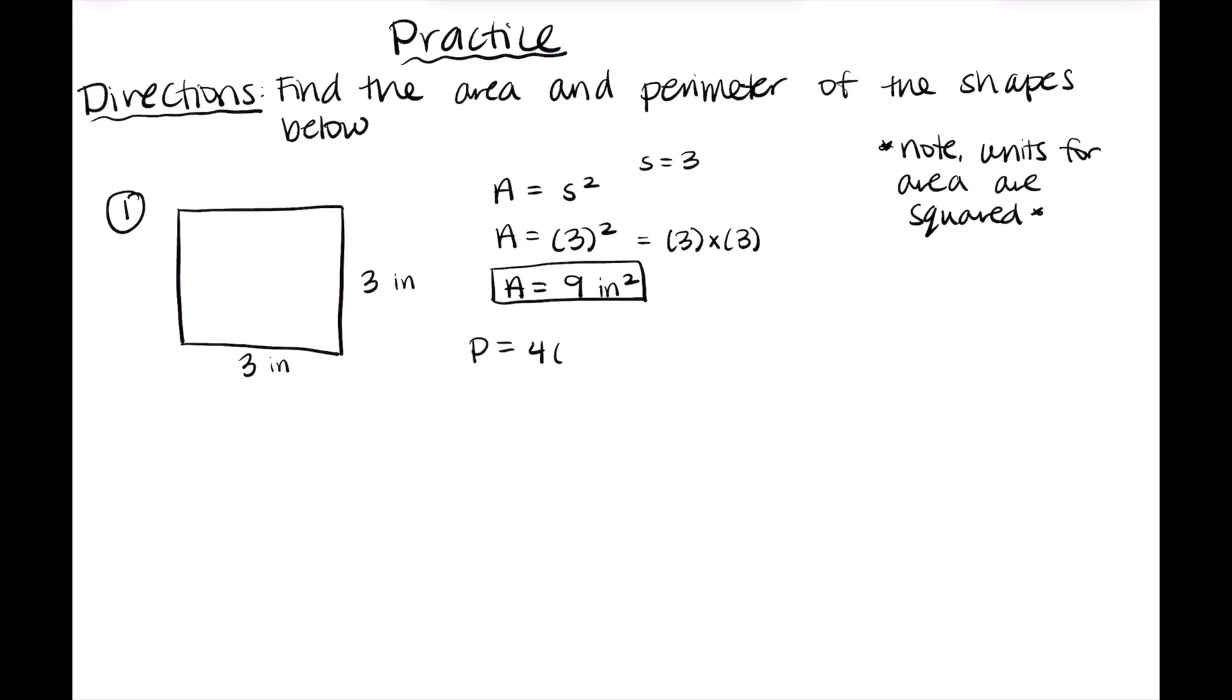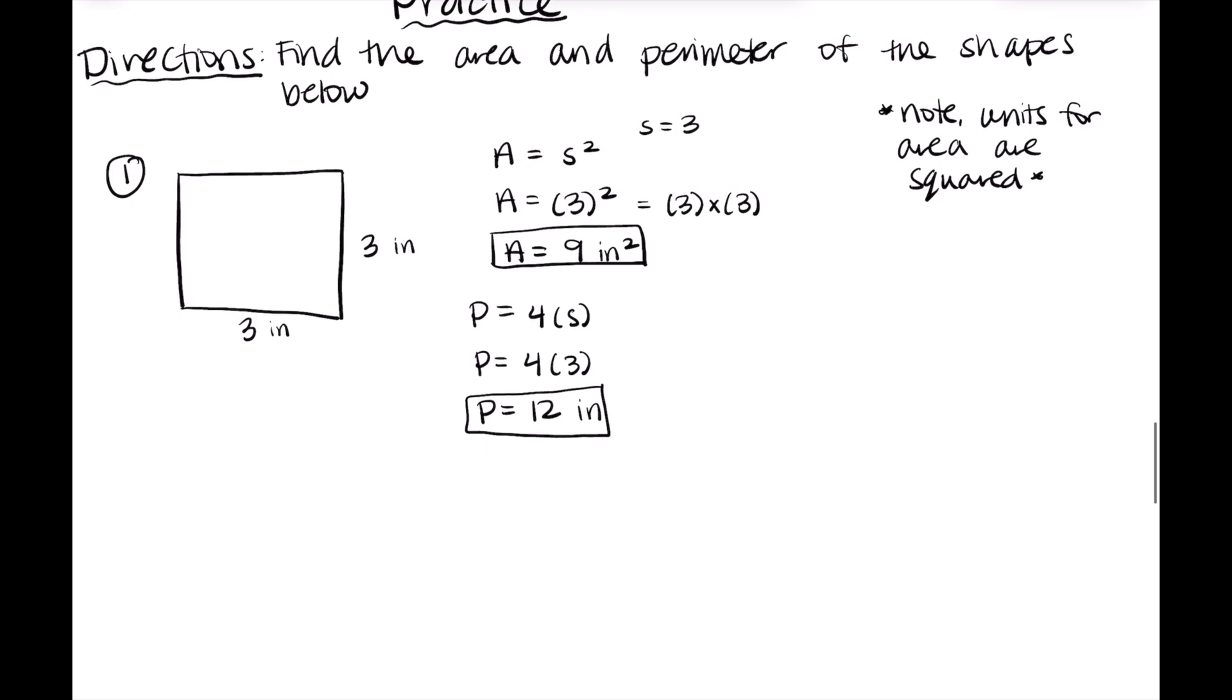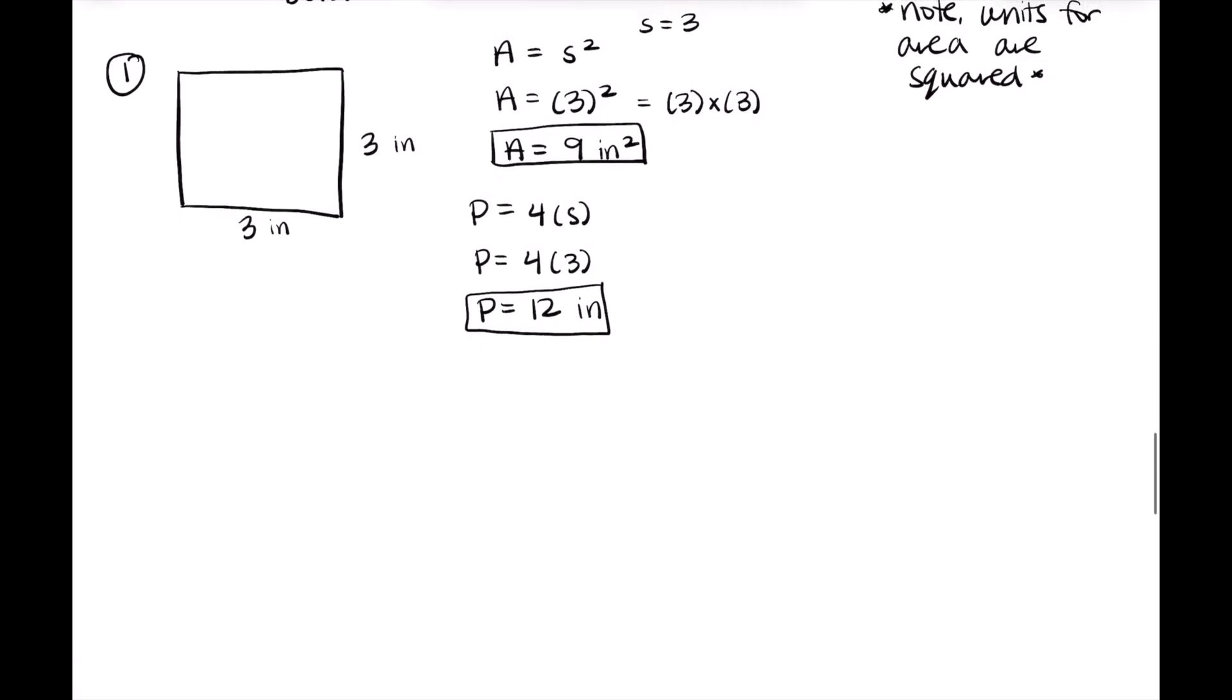Now we'll get into perimeter. And if we recall, the equation for a perimeter of a square is just four times that side length. The side length is three. So we know it's four times three. And units for perimeter are just as is. So it would be 12 inches for our perimeter.